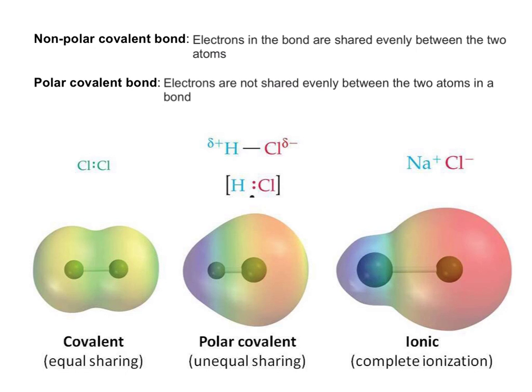So that wraps up our review of the different types of bonding. And our next lesson will go over how to draw Lewis structures. And then eventually we're going to get to how to predict structure from those Lewis structures and the properties that result from that.